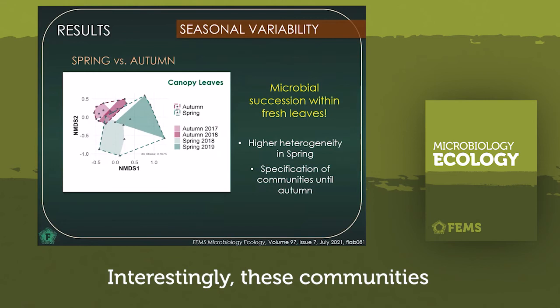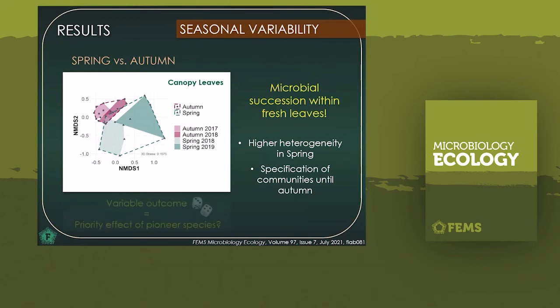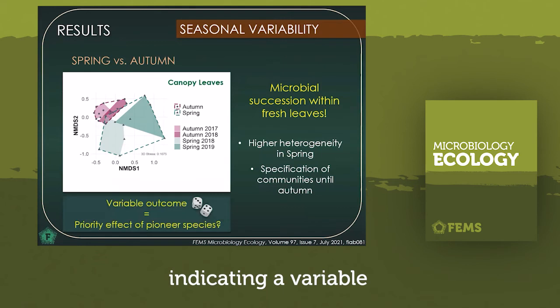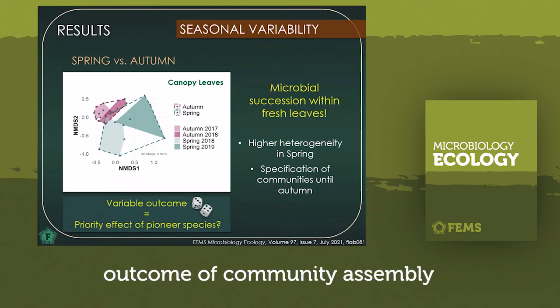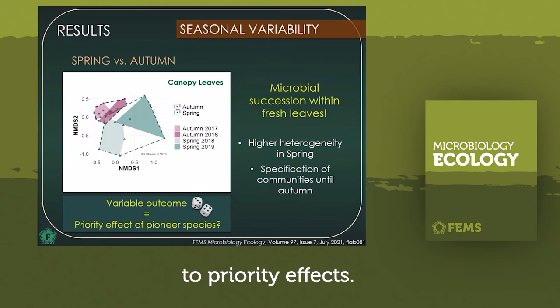Interestingly, these communities became highly specific for the respective autumn sampling, indicating a variable outcome of community assembly right after colonization due to priority effects.